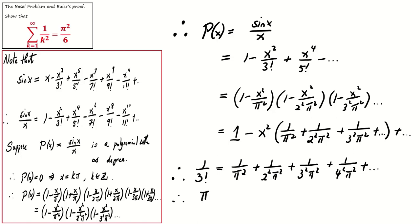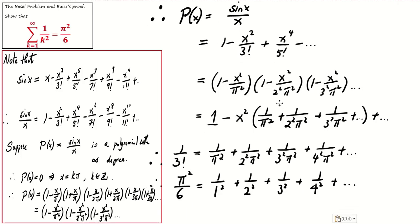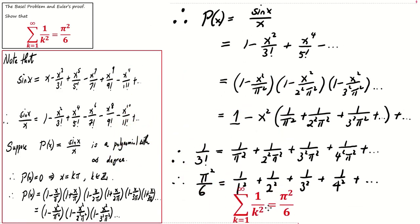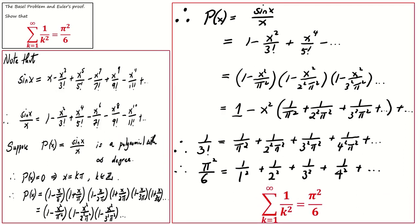This means that 1 over 1 squared plus 1 over 2 squared plus 1 over 3 squared and so on equals pi squared over 3 factorial, which is pi squared over 6. This means that the summation of 1 over k squared where k equals 1 to infinity equals pi squared over 6.